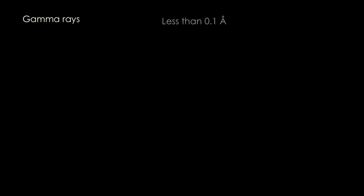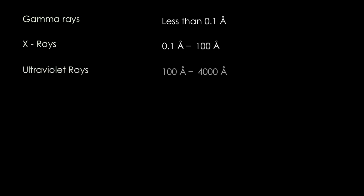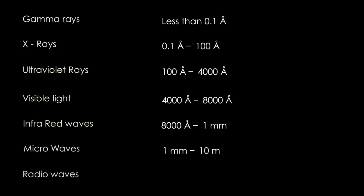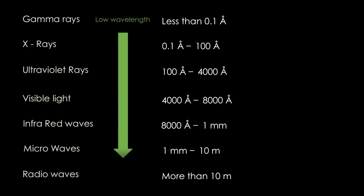Here are the types of electromagnetic waves. Gamma rays have an extremely small wavelength — less than 0.1 angstroms. Then there are X-rays with wavelengths up to 100 angstroms, then ultraviolet rays, then visible light — which is a very small part of the entire electromagnetic spectrum — with wavelengths from 4000 to 8000 angstroms. Then we have infrared waves, microwaves, and radio waves whose wavelength is more than 10 meters. The wavelength of electromagnetic waves increases as we go from gamma rays to radio waves.